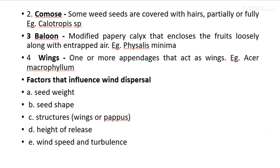The next structure is the comos structure — some weed seeds are covered with hairs, partially or fully. An example is Calotropis species. The third structure is the balloon structure: a modified papery calyx that encloses the fruit closely along with entrapped air. An example is Physalis minima.